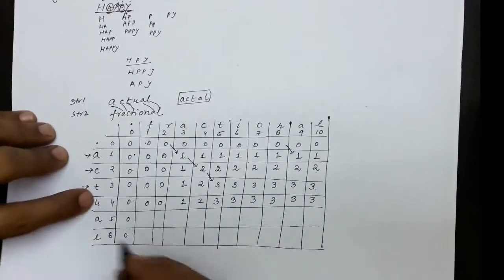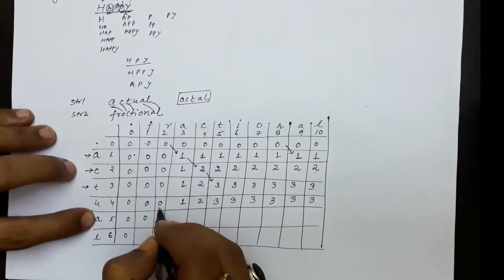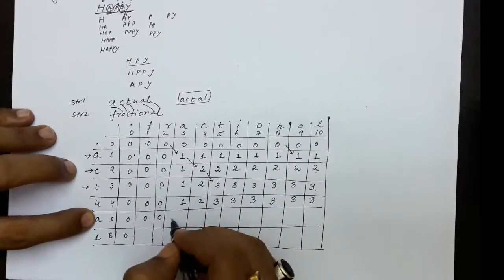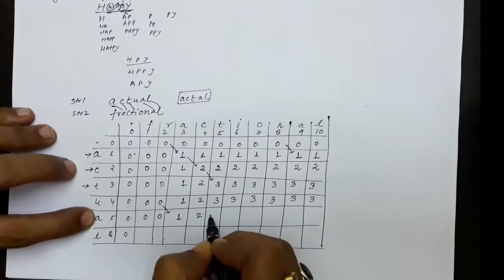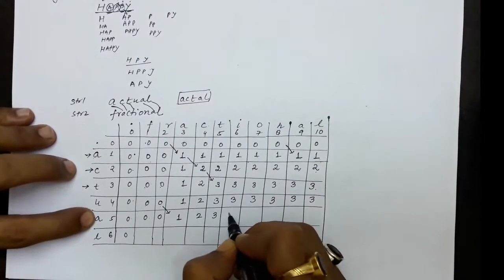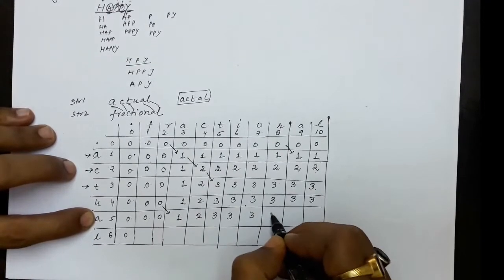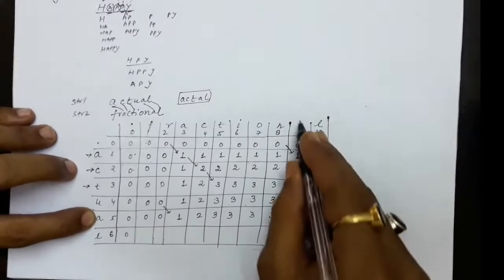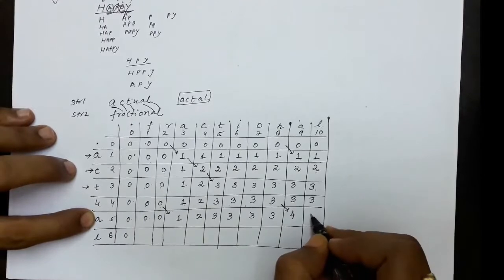Now A is compared with F — no match, maximum. A and R — no match. A and A has a match, so diagonal value plus 1 equals 1. A and C, T, I, O — no match, carry maximum. A and N — no match, maximum. Now A and A has a match again, so diagonal value plus 1 gives 4. A and L — no match, maximum of these two is 4.